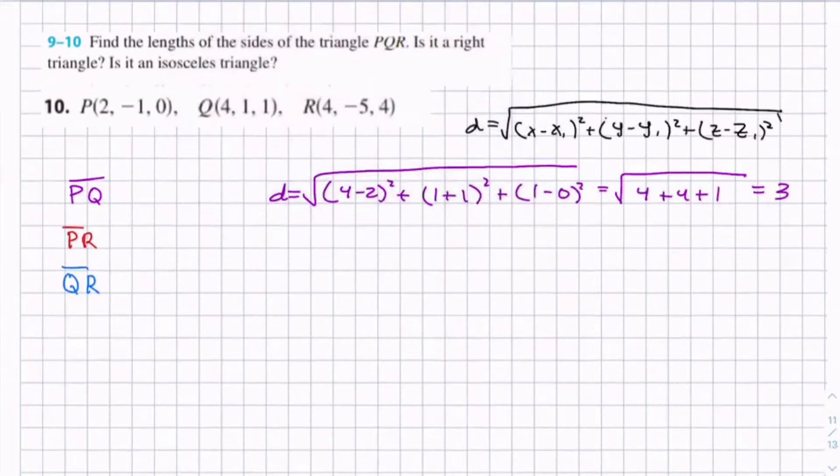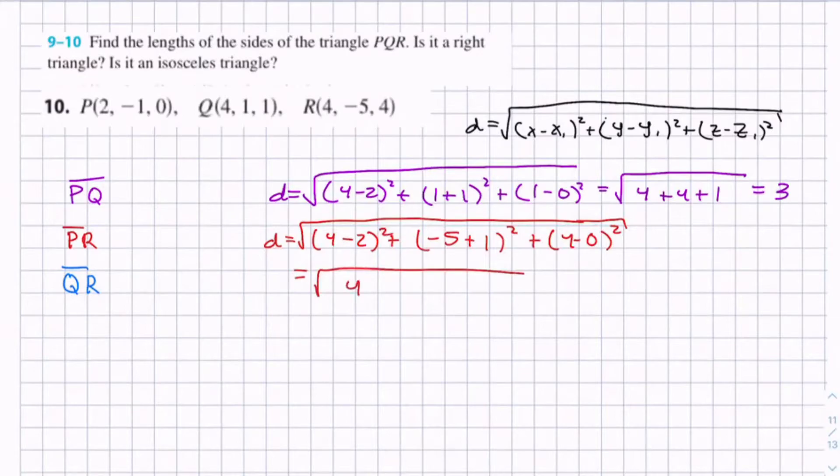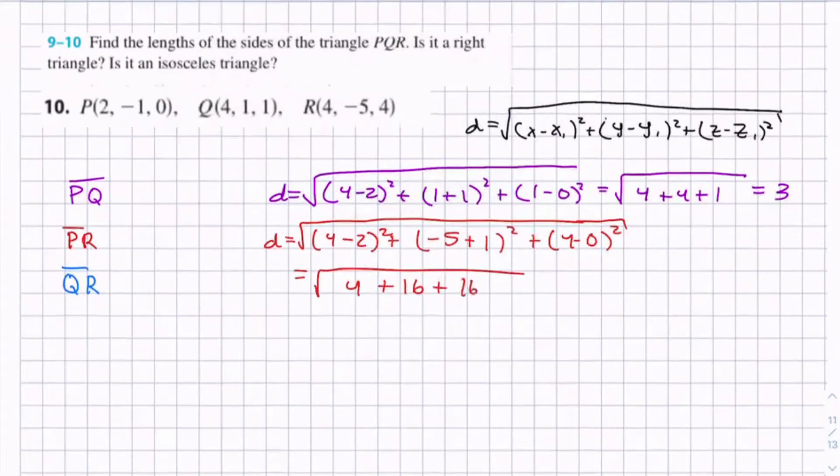So now for PR, the distance equals (4 - 2)² plus (-5 - (-1))², which is plus 1, plus (4 - 0)². And this equals 2², which is 4, -4² which is 16, 4² which is 16, which is square root of 36, which equals 6.